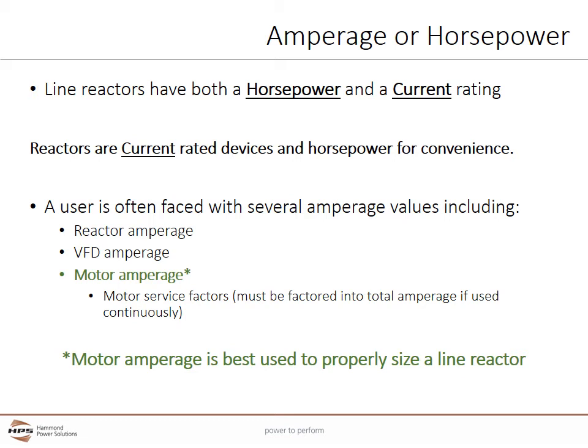Line reactors have both a horsepower and a current rating. Ultimately, reactors are current-rated devices. Horsepower ratings are for convenient selection. HPS's horsepower ratings typically follow the NEC motor amperage charts. A user is often faced with several amperage values including the reactor's amperage, the VFD's amperage, the motor's amperage, and the motor's service factor. The motor's service factor must be factored into the total amperage if the application will use this extra capacity continuously. In most cases, the motor's amperage is best used to properly size a line reactor.